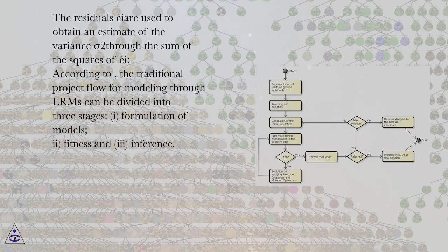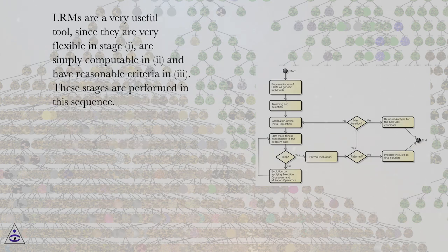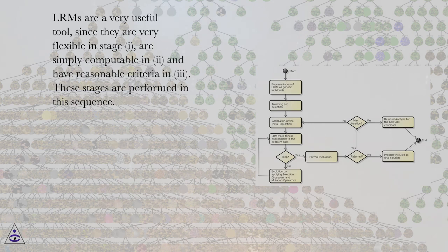According to, the traditional project flow for modeling through LRMs can be divided into three stages: 1) formulation of models, 2) fitness, and 3) inference. LRMs are a very useful tool, since they are very flexible in stage 1, are simply computable in 2, and have reasonable criteria in 3. These stages are performed in this sequence.